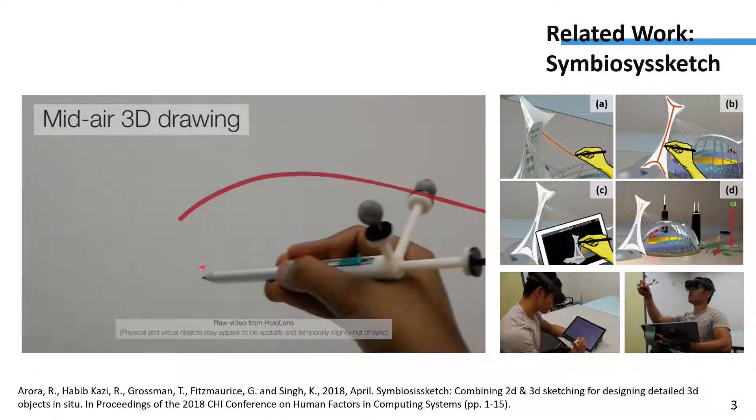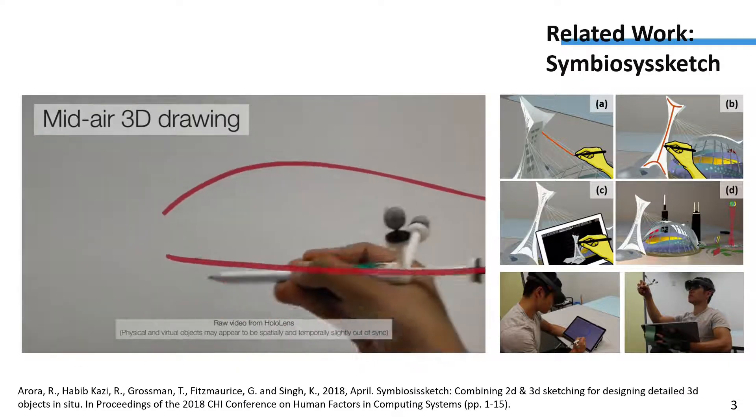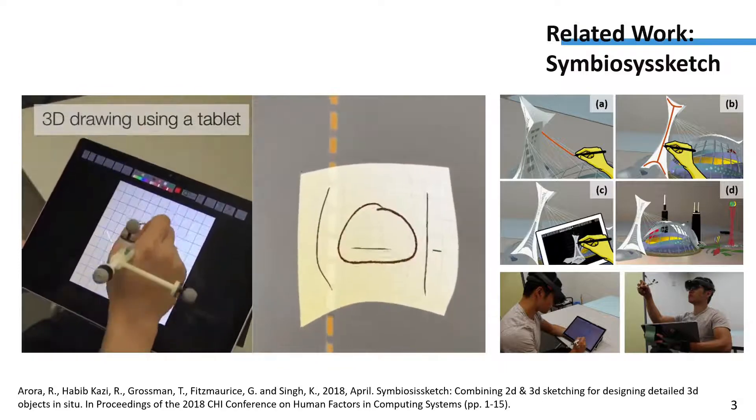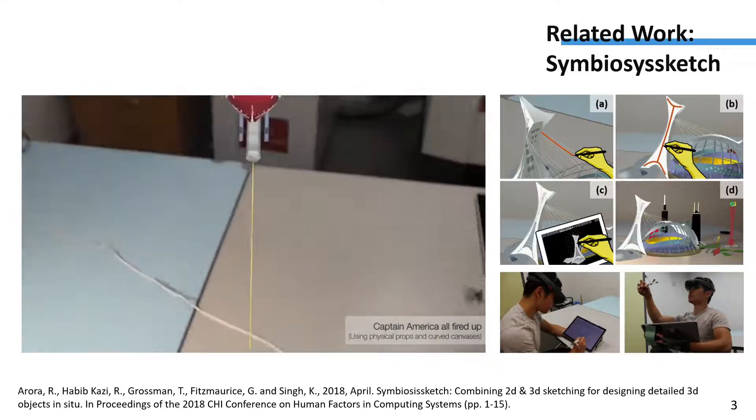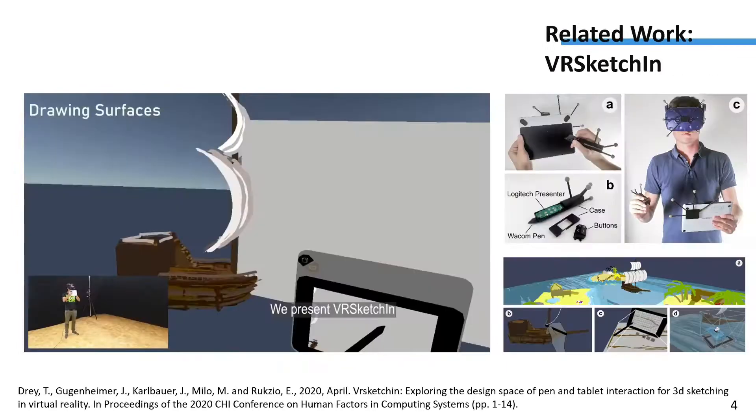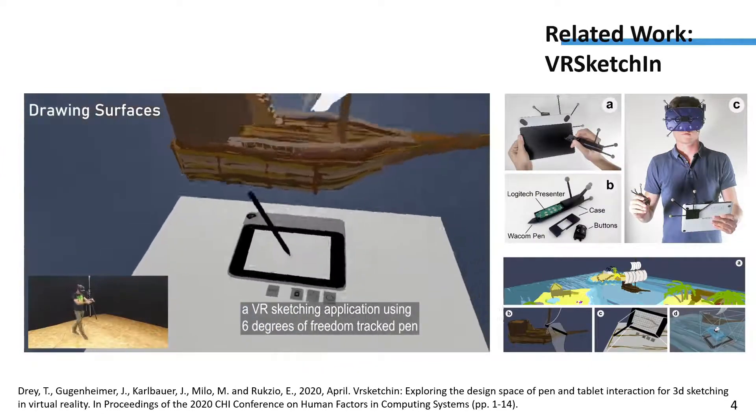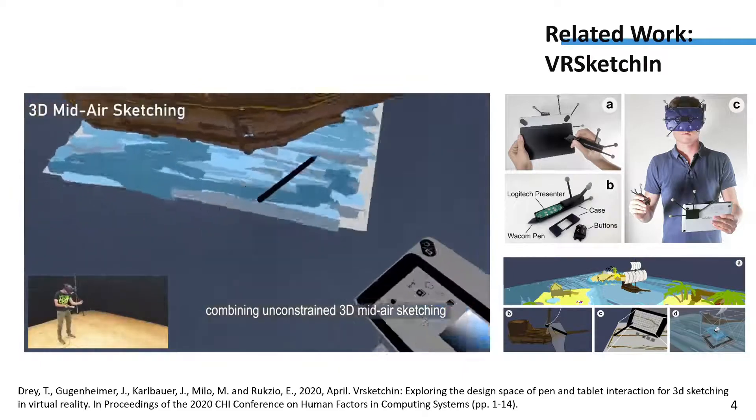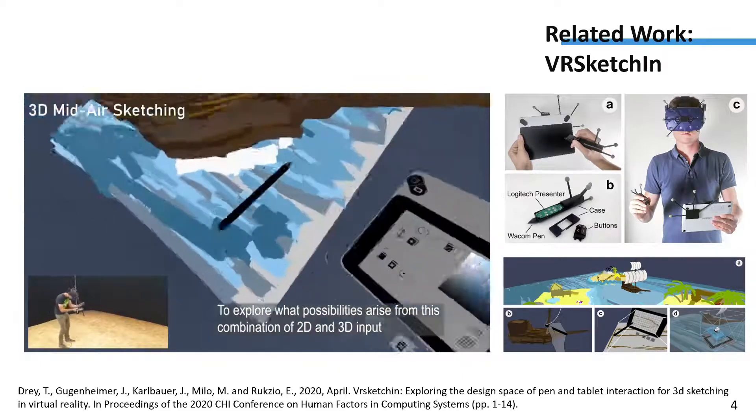To evaluate the inaccuracy of 3D sketching, Symbiosis Sketch was proposed, which combines sketching in mid-air and sketching on a digital tablet to create detailed 3D designs in AR. More recently, YS adopted similar approaches, using a tablet and pen to draw on a tablet in VR to cope with inaccurate 3D sketching.